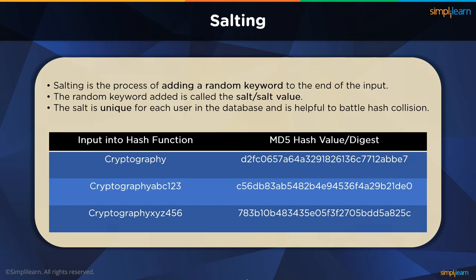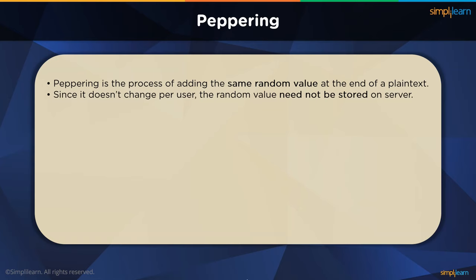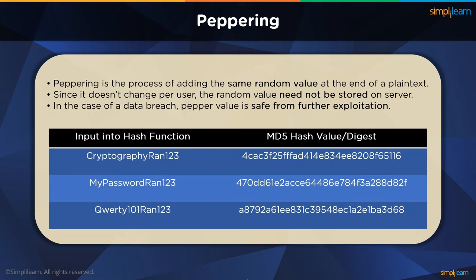This is something that peppering aims to solve. Peppering is the process of adding a random string of data to the input before passing it to the hash function. But this time, the random string is not unique for each user — it is common for all users in the database, and this extra bit is called the pepper. The pepper isn't stored on the servers; it is mostly hardcoded into the website's source code since it's going to be the same for all credentials. This way, even if the servers get hacked, attackers will not have the right pepper needed to crack all the passwords. Many websites use a combination of salting and peppering to solve hash collision and bolster security.